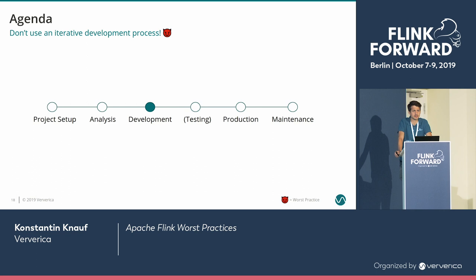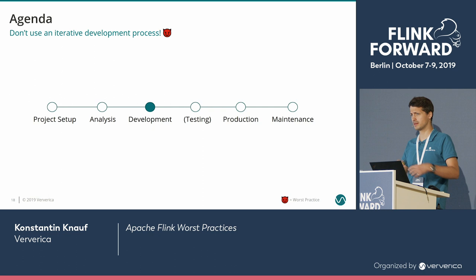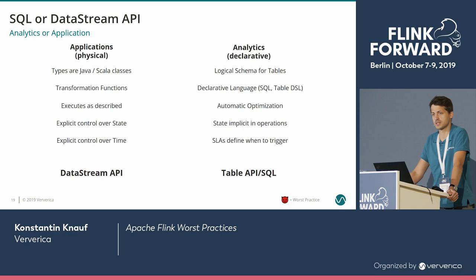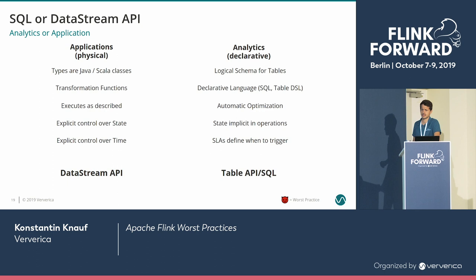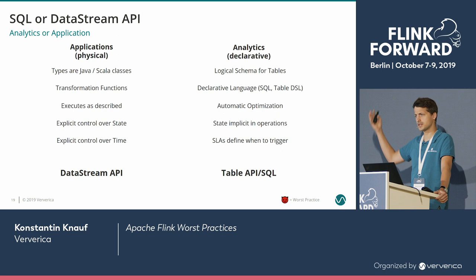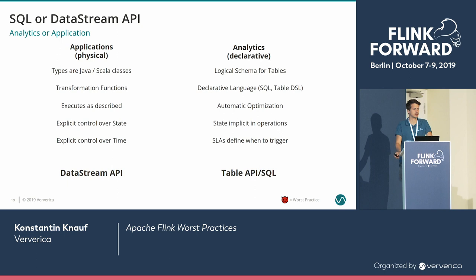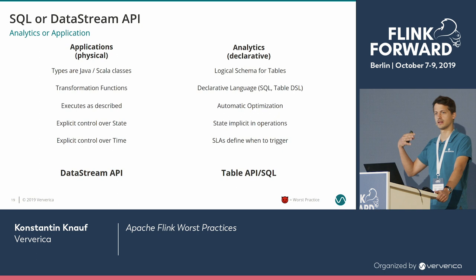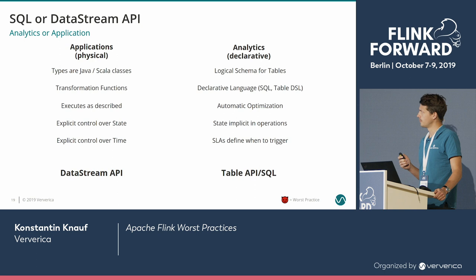So we've clarified our requirements and they're set in stone. Now we go to development — this section is a big bag of gotchas in Apache Flink development. First, you need to decide: do I use the DataStream API or the SQL/Table API? If you have an analytics or simple ETL use case, the Table API is probably a good fit. If you have an application use case, the DataStream API might be a better fit. It's got to do with data types, schemas, fine-grained state access, and things like that.